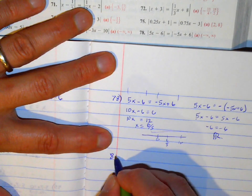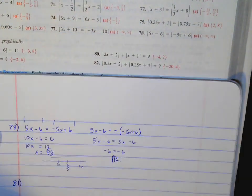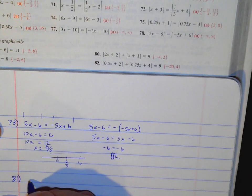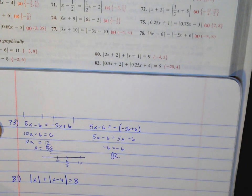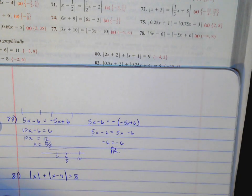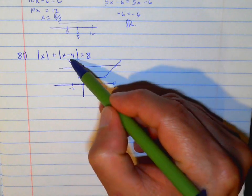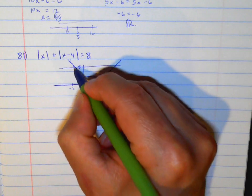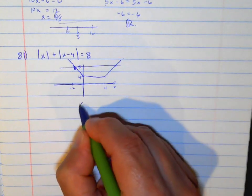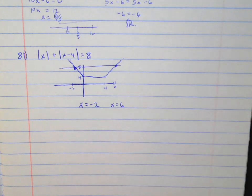Number 81, our last one. Looking at the graph in Desmos — put one side in and get one graph, y = 8 gives the other. We can see where they're equal: x = -2 and x = 6. And that was the end of that long assignment.